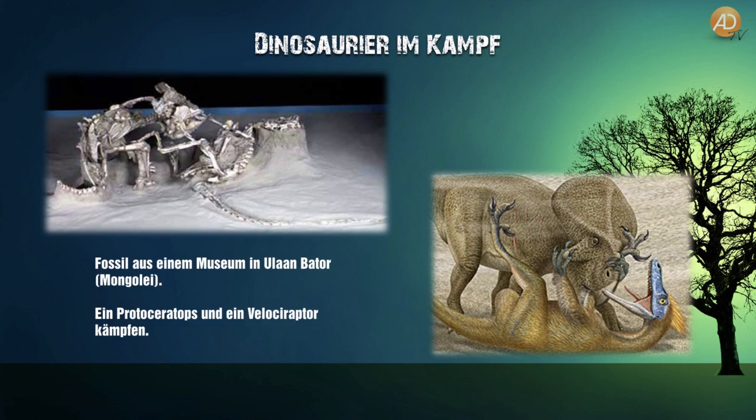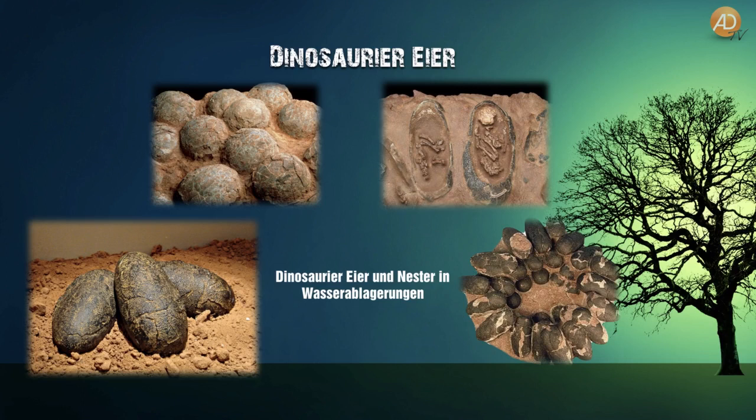In der Mongolei, wenn wir in Ulaanbaatar ins Museum gehen, werden wir zwei Dinosaurier entdecken, die miteinander im Kampf sind: ein Velociraptor und ein Protoceratops. Diese beiden Tiere waren im Kampf miteinander, als sie verschüttet worden sind – man sieht noch die Hand von dem einen da im Maul. Also auch hier augenblicklich verschüttet. Das gleiche gilt für die ganzen Dinosauriereier, die wir finden. Sämtliche Dinosauriereier und übrigens auch alle Dinosaurier, die wir finden, sind alle in Wasser abgelagert. Es gibt nicht einen einzigen, der in Vulkanasche liegt. Es gibt nicht einen einzigen Dinosaurier, der nicht in Wasser abgelagert worden ist.